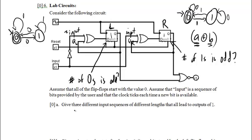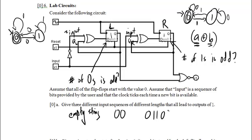We need three different input sequences of different lengths that all lead to output one. Output is one only when both flip-flops are in state zero — meaning the number of ones is not odd AND the number of zeros is not odd, i.e., both are even. The empty string works. "00" works — we just stay in the accepting states. "011011" works too: two zeros and four ones, so both counts are even. Any sequence with an even number of ones and an even number of zeros will work.